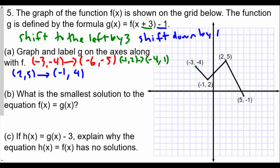And finally, the last coordinate (5, -1): shift left by 3 — 5 minus 3 is 2; shift down by 1 — -1 minus 1 is -2. So it becomes (2, -2). Now we'll plot these points.